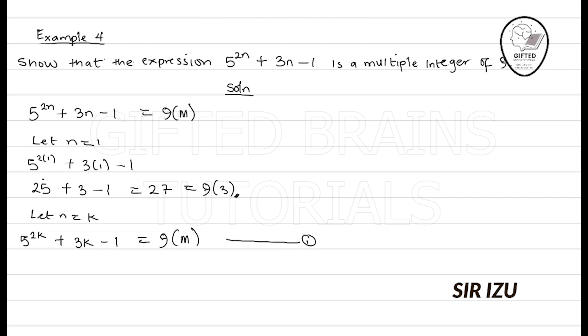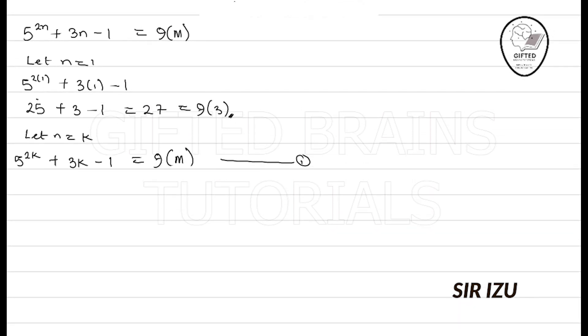And so, what I will just do now is to say the last step. Let n be equal to k+1. It means anywhere I see n, substitute it with k+1. So, this will be 5^(2(k+1)) + 3(k+1), then minus 1.